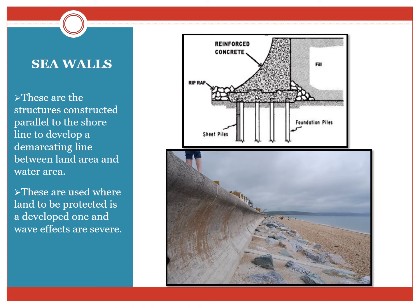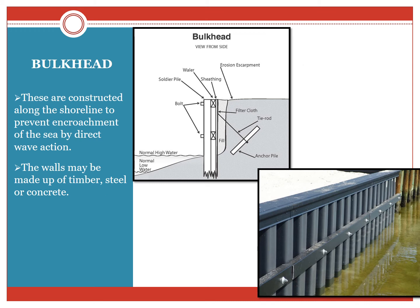Firstly, sea walls. These are structures constructed parallel to the shoreline to develop a demarcating line between the land and the water. These are used where the land being protected is a developed one and the wave effects are severe. As you can see in this figure, this is a sea wall protecting the land by the action of the wave. Moving across to a bulkhead — these are constructed along a shoreline to prevent the encroachment of the sea by direct wave action. The walls may be made up of timber, steel, or concrete.